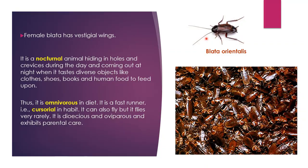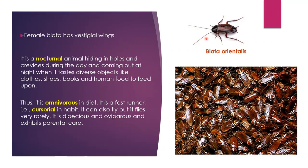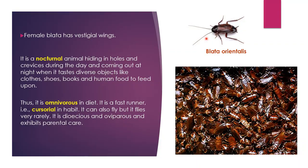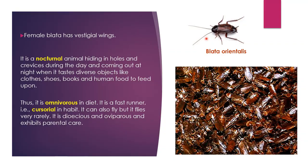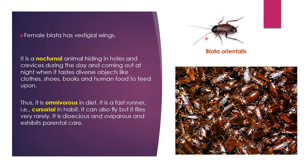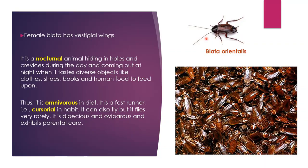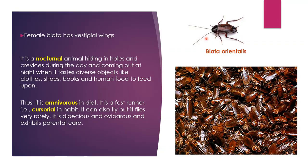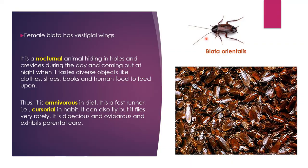They are dioecious — means sexes are separate, male और female individual अलग-अलग पाए जाते हैं। साथ ही यहाँ sexual dimorphism भी पाया जाता है — male और female को उनके external features के basis पर identify किया जा सकता है। ये oviparous हैं और parental care भी show करते हैं — parent cockroaches अपने young ones की देखभाल तब तक करते हैं जब तक वो mature होकर खुद survive नहीं करने लगते।